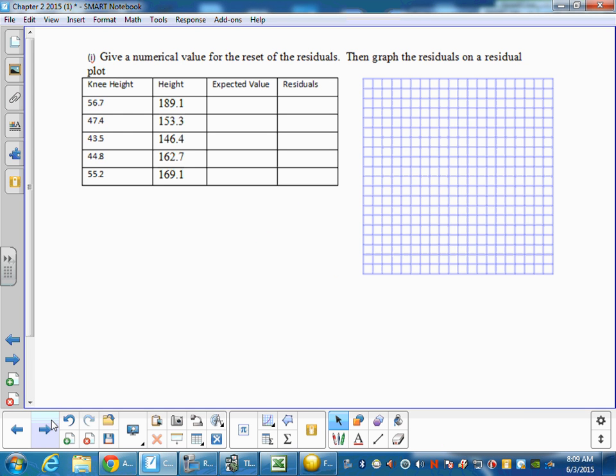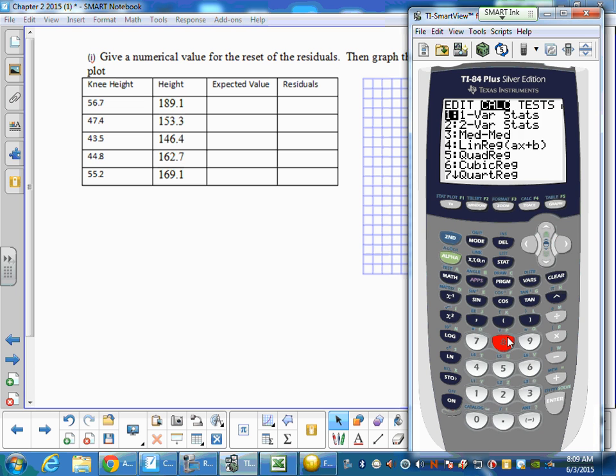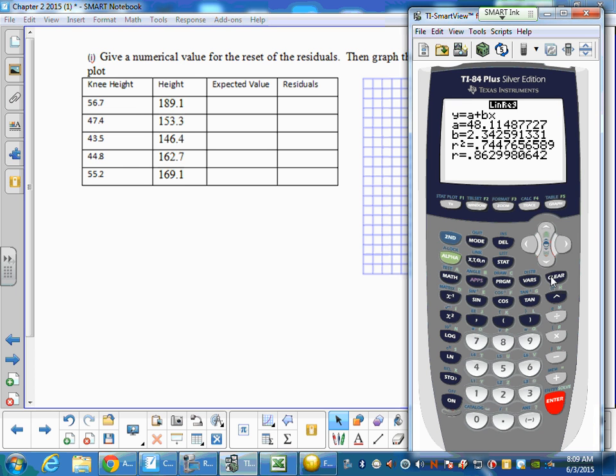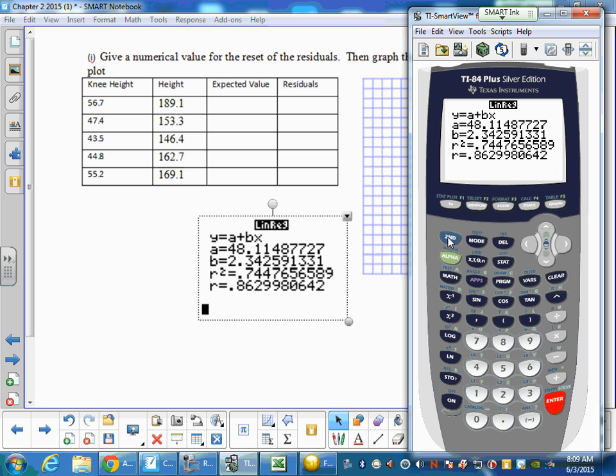So to do that, what we want to do is find the expected value for each of those, subtract it out, and we'd have the residuals. Now our calculator gives us another way to do this. Once we do our linear regression, so 8, we have our linear regression. Hit enter. This is our linear regression equation, right? So now what we want to do is to find the residuals.